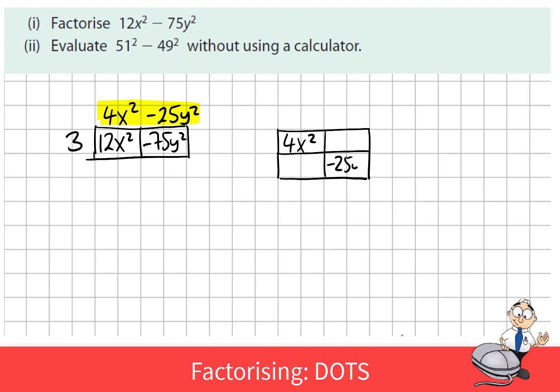So we'll apply the difference of two squares strategy to this. In the quadratic grid we fill in the 4x squared and we factorize this as 2x by 2x. And negative 5y by positive 5y gives us negative 25y squared. Again if we fill in the diagonals we'd see that the other diagonals add up to 0.